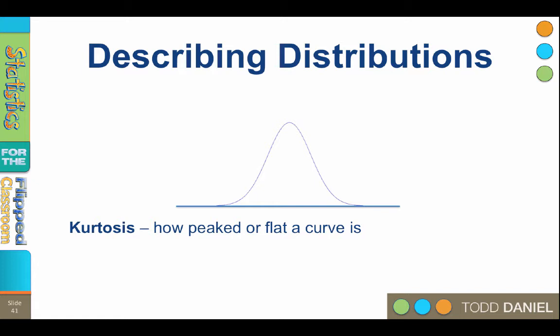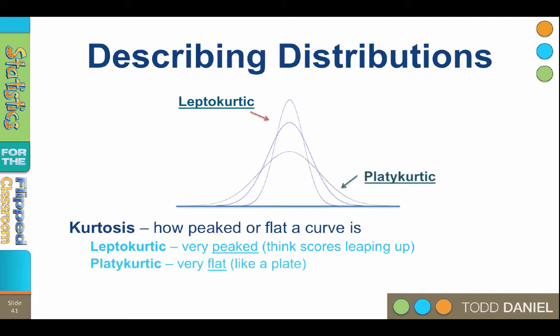The name for the peakedness or flatness of a curve is called kurtosis. When the scores are very close together, then the curve becomes peaked. We call this a leptokurtic curve. Think of the scores leaping up, leptokurtic. When the scores are very spread out, the curve becomes flat like a plate. We call this platokurtic. Platokurtic is a flattened curve in the shape of a plate. A normal curve is mesokurtic. Its kurtosis is medium.